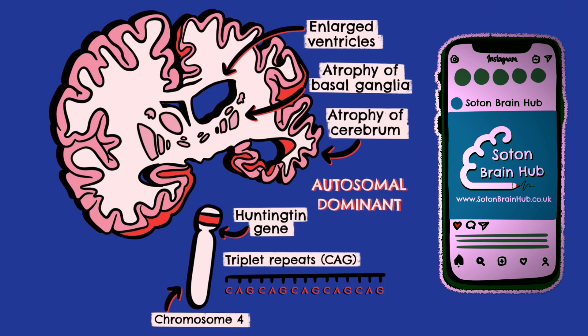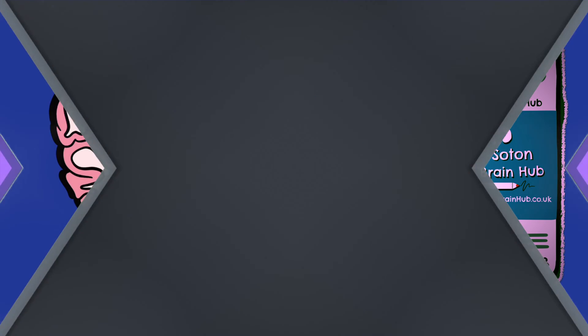The mutation comprises of CAG trinucleotide repeats which continue to enlarge at subsequent generations. This leads to genetic anticipation, in which symptoms of Huntington's disease are more severe and/or occur at an earlier age with each generation.